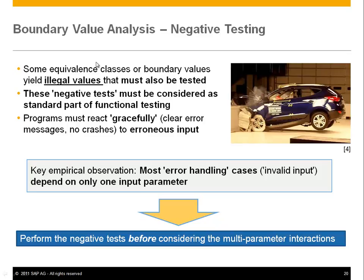Some of those boundary values are illegal values that must also be tested to verify that the program behaves correctly and reacts gracefully — for instance, that an expected error message appears, that something defined happens, and that you don't get crashes. These are negative tests considered a standard part of functional testing, and you typically find a lot of erroneous behavior in programs by focusing on these things.